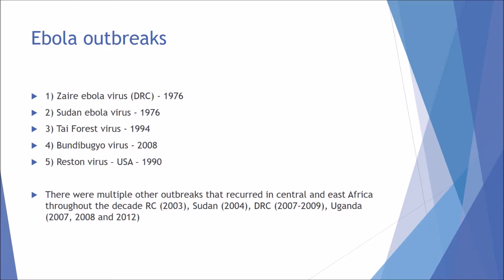Between these dates, there were multiple other outbreaks that reoccurred in Central and East Africa — for example the Republic of Congo in 2003, Sudan in 2004, the Democratic Republic of Congo from 2007 to 2009, Uganda from 2007 to 2008, and even 2012.